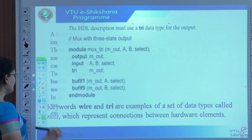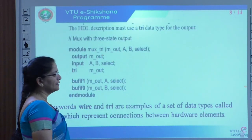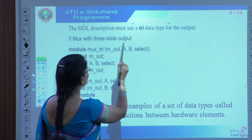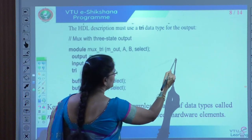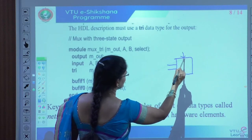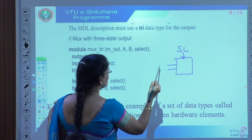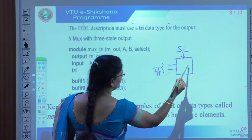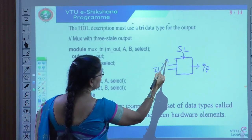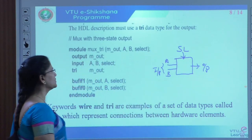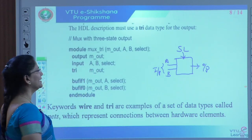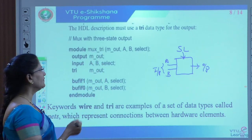How to use tri-state gates — with an example. Here we use the tri-state gates with a 2-to-1 multiplexer. All of you know how to represent 2-to-1: two inputs, one select line, and one output. For this MUX, inputs are A and B, the select line is considered as the control, and the output is represented as M_out. I have defined the keyword 'module' as tri_mux. M_out is the output variable, A and B as well as the select line are inputs.